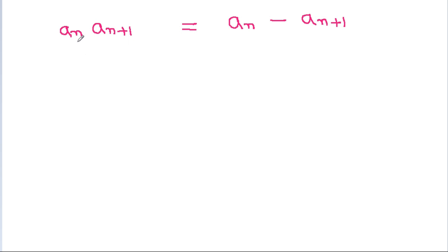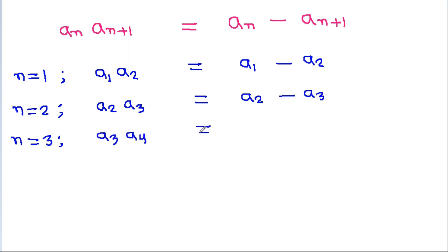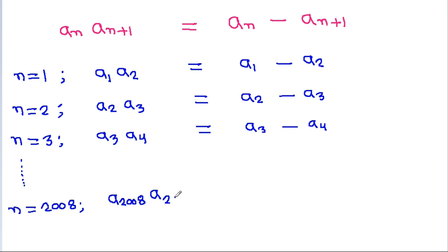For n equal to 1: a_1·a_2 is equal to a_1 minus a_2. For n equal to 2: a_2·a_3 is equal to a_2 minus a_3. For n equal to 3: a_3·a_4 is equal to a_3 minus a_4. And in the same way, for n equal to 2008: a_{2008}·a_{2009} is equal to a_{2008} minus a_{2009}.